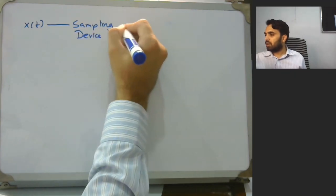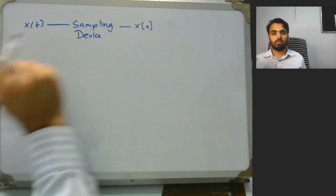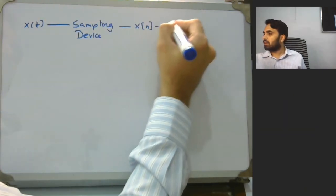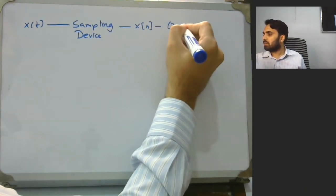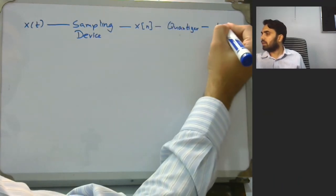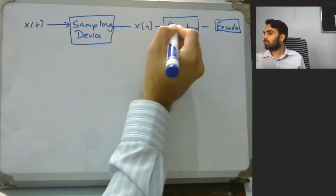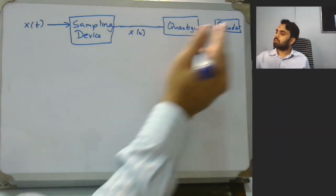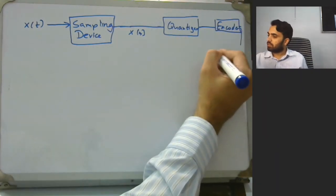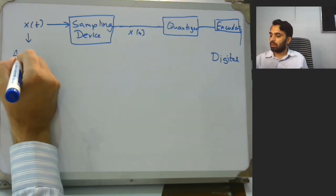Eventually over here you would have x of n. That is, it has become discrete. Then you would pass it through a quantizer and finally an encoder. So this is our digital signal and over here we had our analog signal.